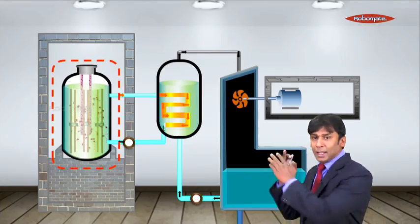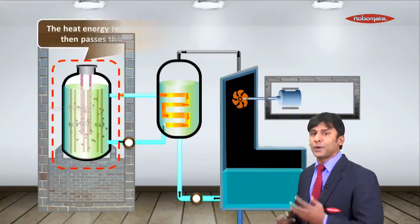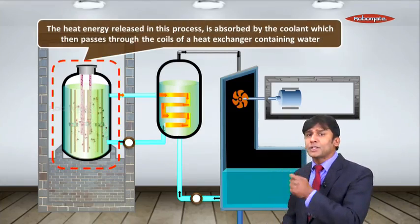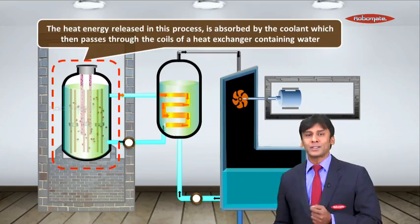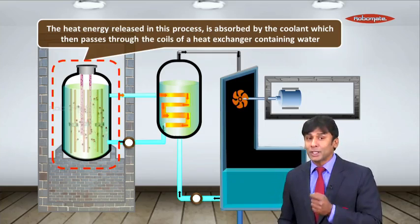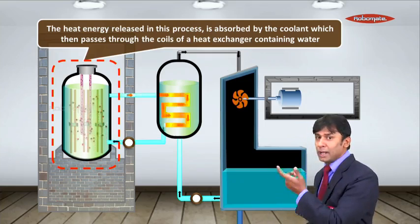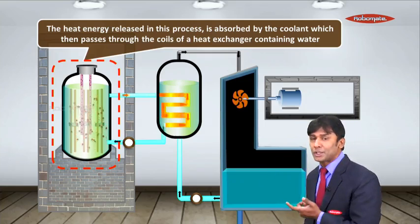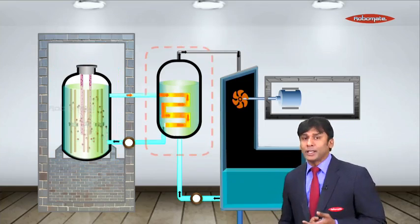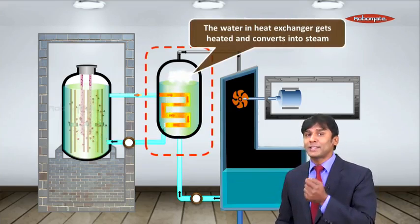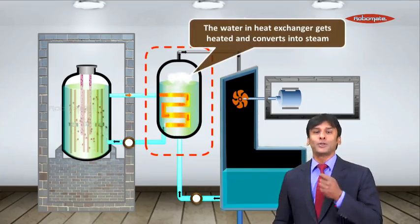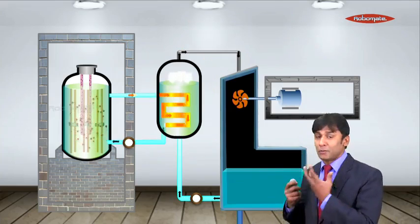Now let us say in this particular section, heat is produced. So the heat energy released in this process is absorbed by the coolant, which then passes through the coils of a heat exchanger containing water. So this will go to the coolant and from the coolant, it goes into the heat exchanger. Now when it goes into the heat exchanger, the water in the heat exchanger gets heated and gets converted into steam. Now we all know steam has a very high pressure.